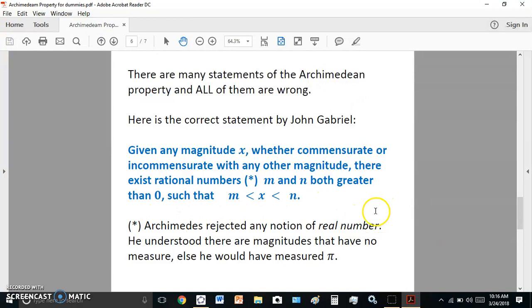There are many statements of the Archimedean property, and all of them are wrong. And this statement here is the correct statement. Given any magnitude X, whether commensurate or incommensurate with any other magnitude, there exist rational numbers M and N, both greater than 0, such that M is less than X is less than N. So Archimedes rejected any notion of real numbers. He didn't even know of real numbers. They were mythical objects. They do not exist. Even today, they don't. He understood there are magnitudes that have no measure.